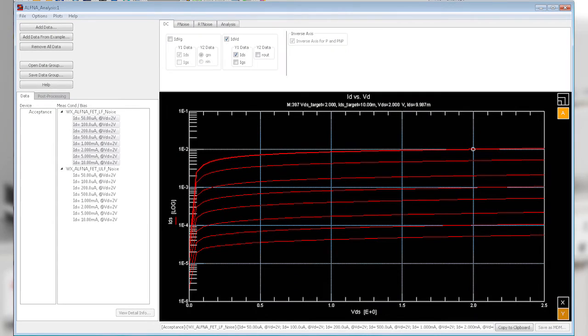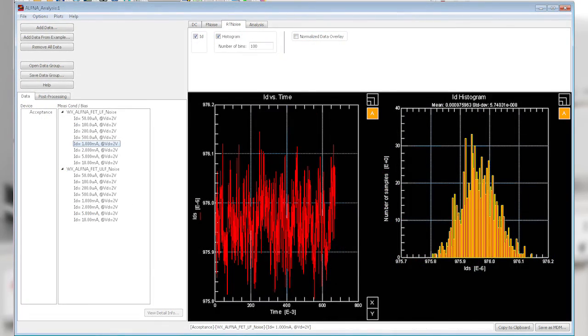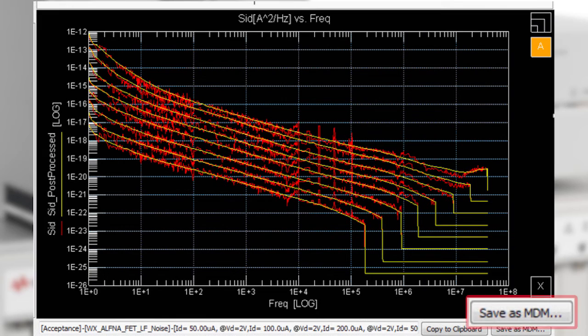Once the measurement is done, we can look at those different outputs including DC current and voltage measurements, SID, SVD, SVG, and random telegraph noise. All the data is conveniently exported to .mdm format for post-processing, device modeling, and analysis.